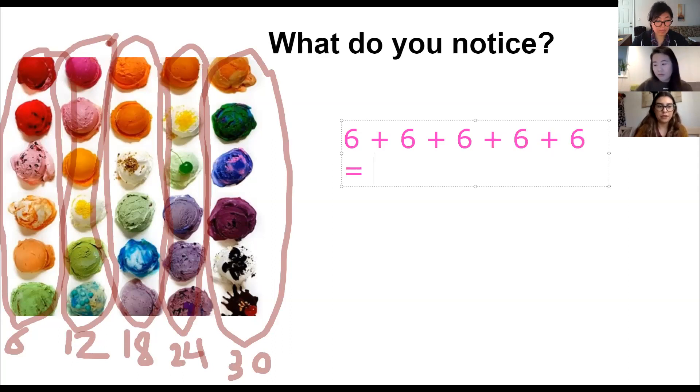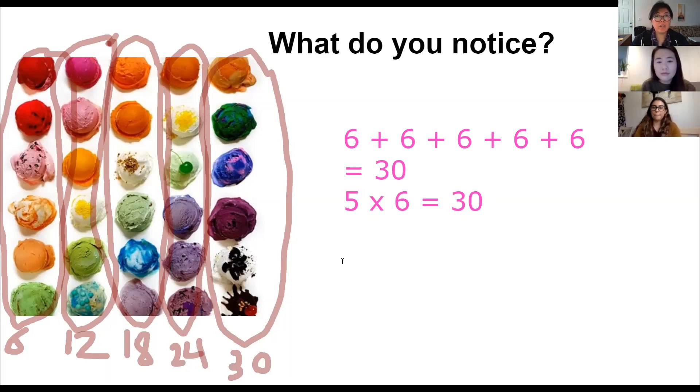So five groups of six - one, two, three, four, five - which makes thirty. So there are thirty scoops of ice cream in all. Boys and girls, I want you to come up with a strategy, a way to group or count how many there are and to write down an equation.